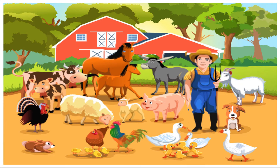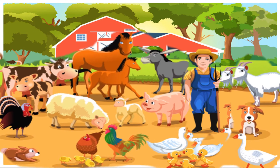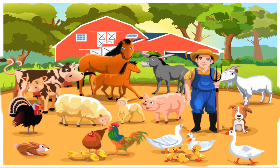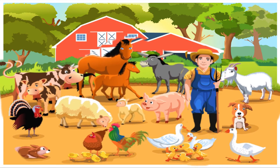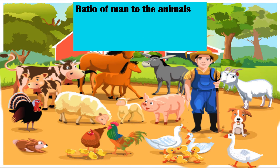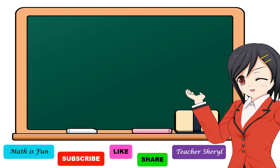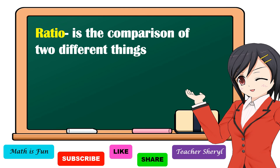For the last question, what is the ratio of man to animals? Let's count how many men — we have only one man. How about the animals? One, two, three, four, five, six, seven, eight, nine, ten, eleven, twelve, thirteen, fourteen, fifteen, sixteen, seventeen, eighteen, nineteen, twenty, twenty-one, twenty-two, twenty-three, twenty-four, twenty-five. So the ratio of man to animals is 1 is to 25, and in fraction form that is one over twenty-five.